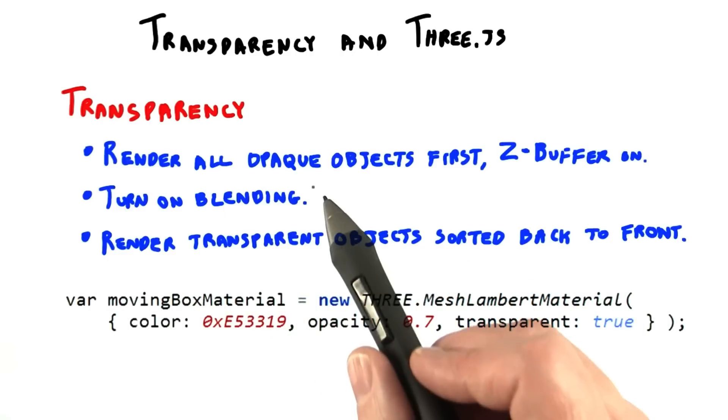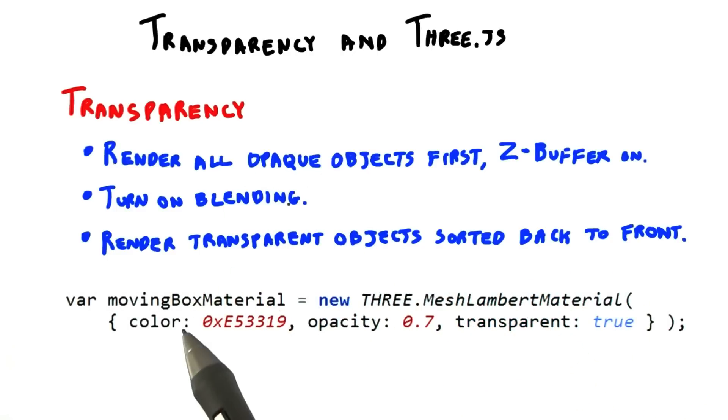This algorithm is in fact what Three.js implements. You make an object transparent by setting its material. There are two parameters to set. The opacity is the alpha value used for blending. You must also set the transparent parameter to be true.